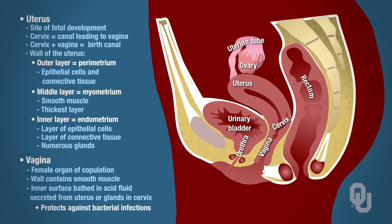We're going to focus on the uterus as well as the vagina. What I want to focus on is the wall of the uterus — there are three layers. There's the outermost layer called the perimetrium, which has epithelial cells and some connective tissues. There's a middle layer called the myometrium, which is composed of smooth muscle. And then the most important layer for us is the endometrium — the innermost layer of the uterine wall — because when we discuss the menstrual cycle, we'll be talking a lot about the endometrium. Over here is the vagina, the female organ of copulation, with lots of smooth muscle and lots of glands.